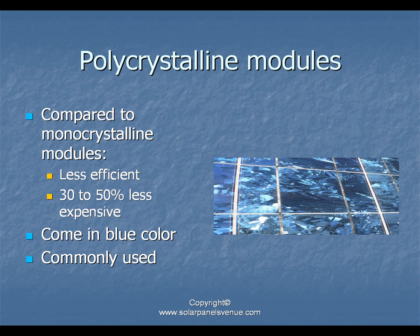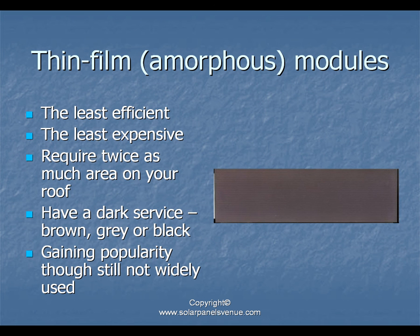Polycrystalline modules are slightly less efficient and cost 30 to 50 percent less than monocrystalline ones when used to produce the same amount of power. They have a life cycle of about 25 years, though modules installed more than 25 years ago are still often perfectly operational. Polycrystalline modules are typically blue and can be easily distinguished by their multifaceted, shimmering appearance.